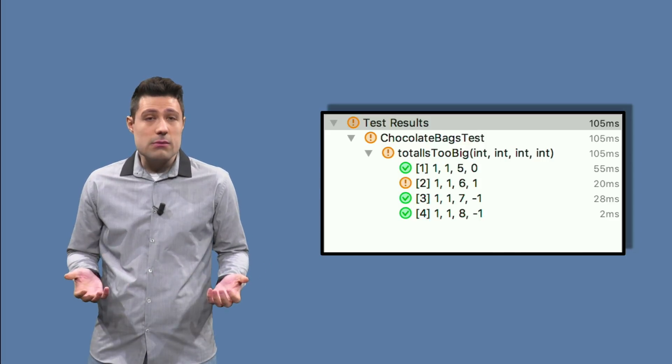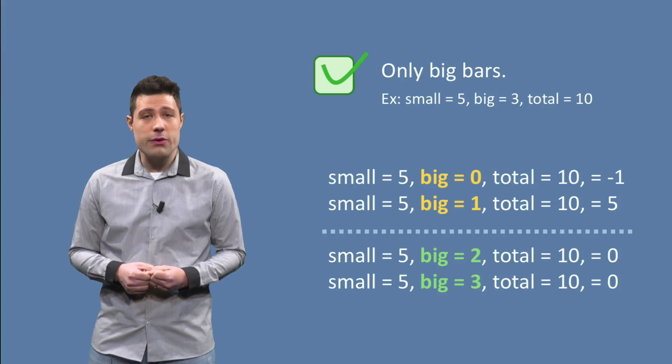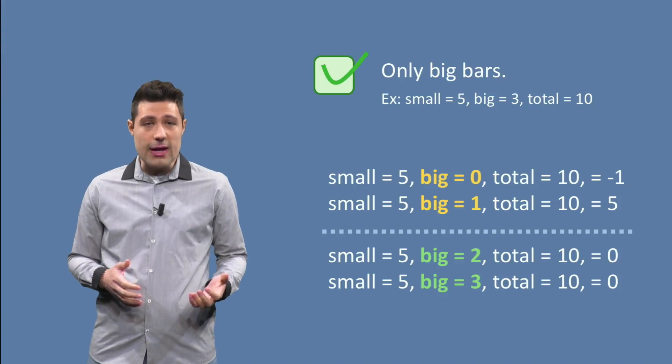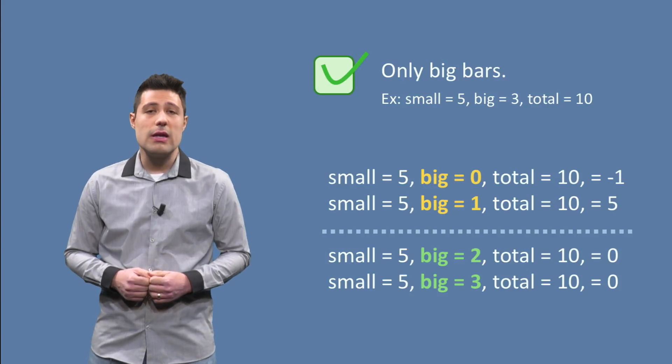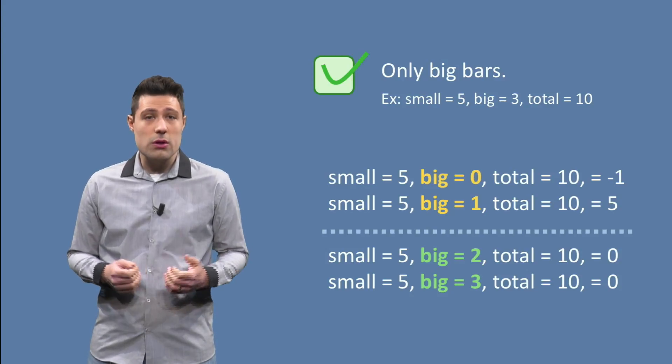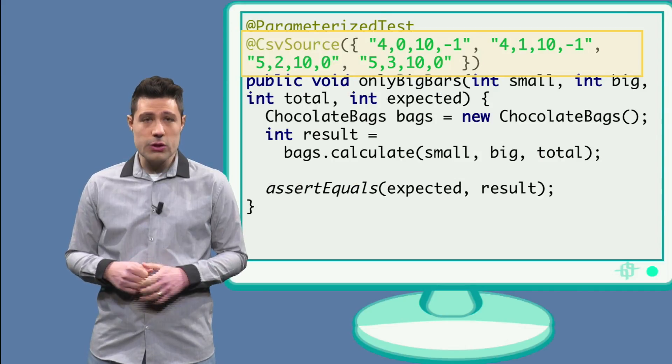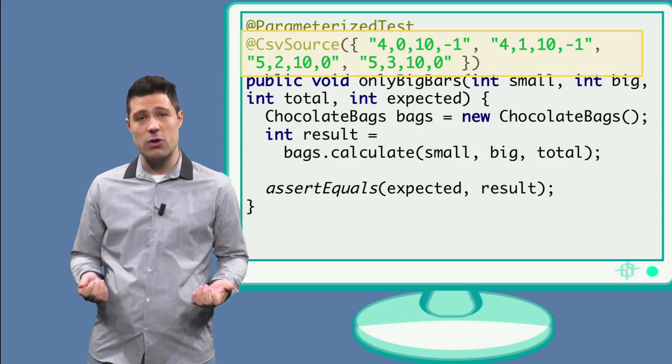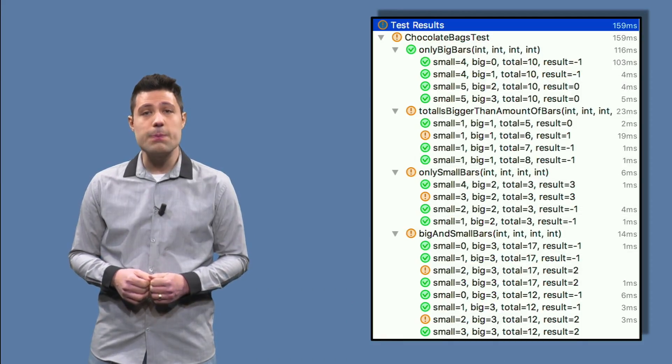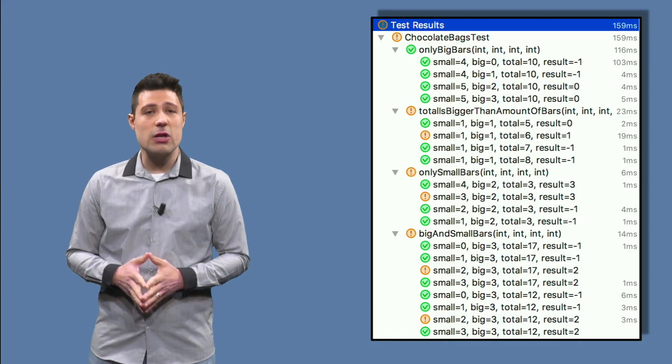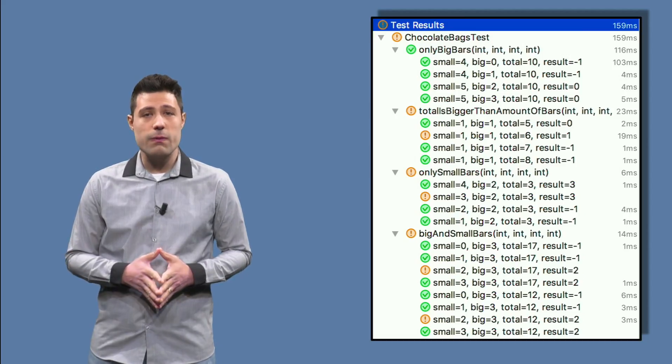Then, we should repeat it to all other partitions and boundaries we have identified. For example, for the only big bars partition, the automated tests would look like this. Notice the values as csv source. After doing it for the remaining two partitions, if we execute the tests, that's the output we'll see. 20 tests being executed and 4 of them are failing.